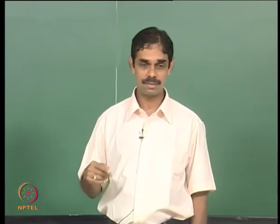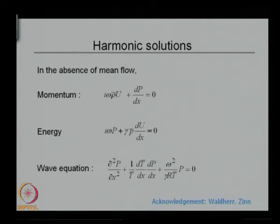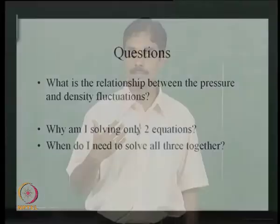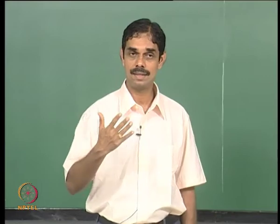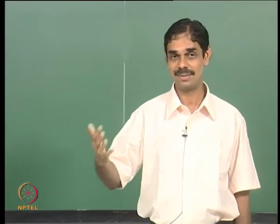The second question was: why am I solving only two equations? I started with momentum and energy. Even if you look at the time domain solution, I was starting with momentum and energy. We actually have three equations: continuity, momentum, and energy. So why are we solving only two? What happened to the third one?